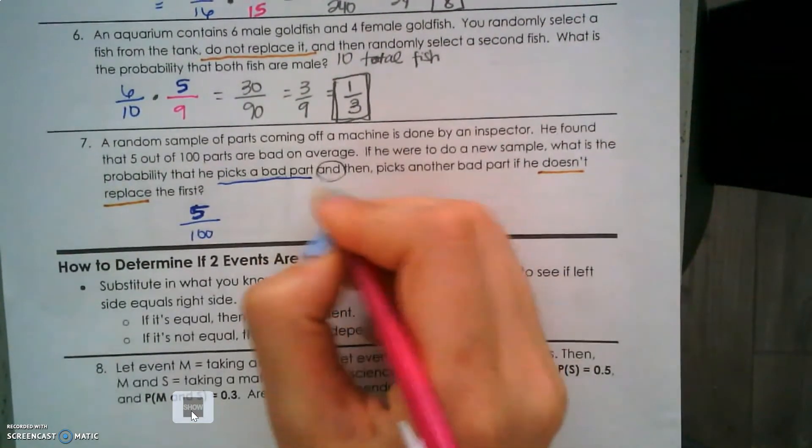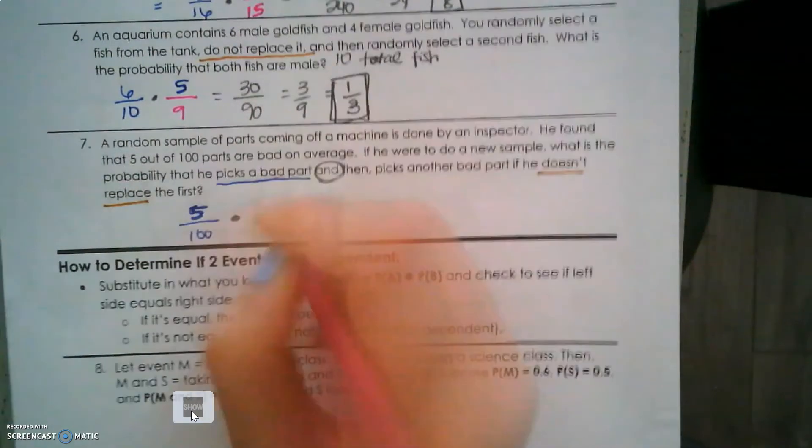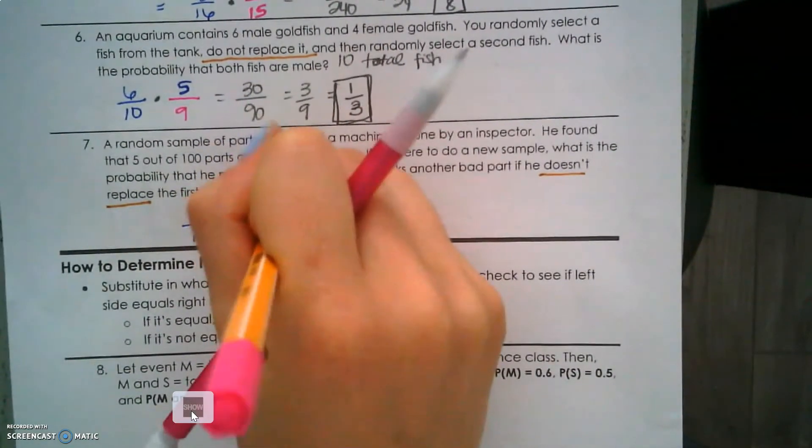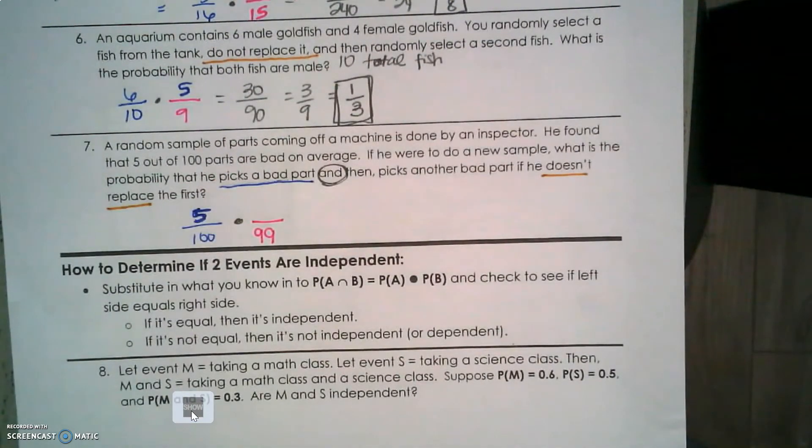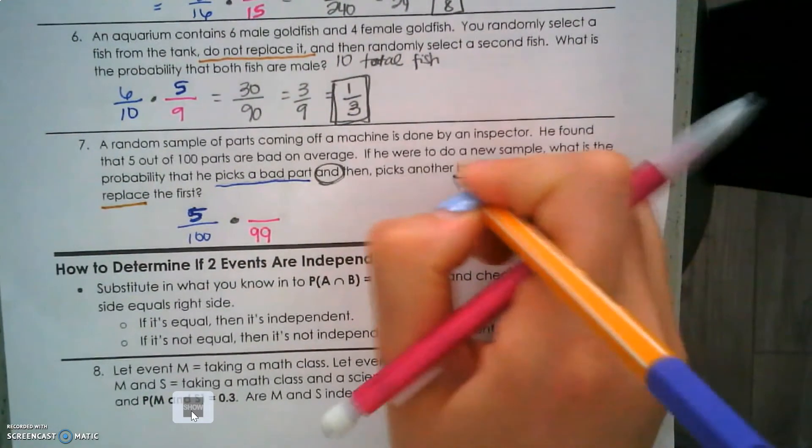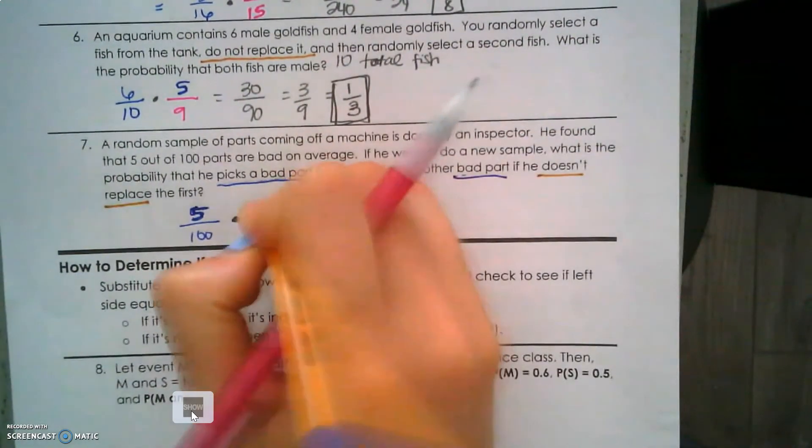The word 'and' tells us to multiply. He picks another bad part - if he doesn't replace it, and I picked a bad part and kept it, I have 99 parts left in my sample. If I keep a bad part, I have 4 more bad parts to choose from.